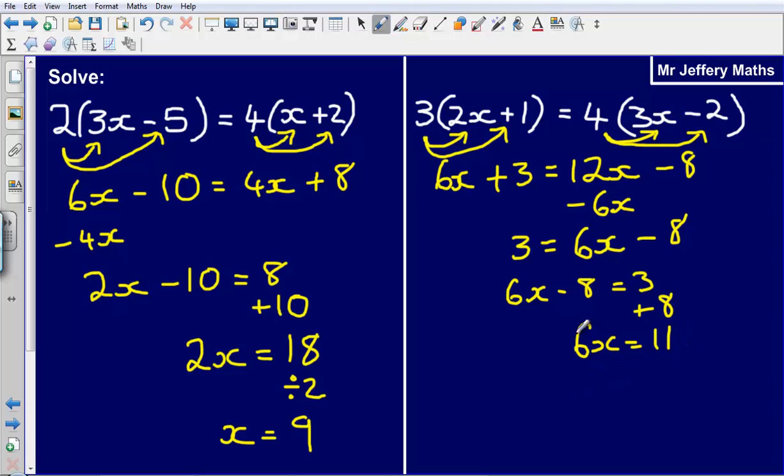And now to get rid of this multiplied by 6, 6 multiplied by a number that we don't know is equal to 11, I'm just going to divide by 6, doing the opposite of multiplied by 6.